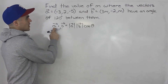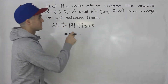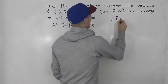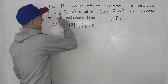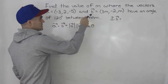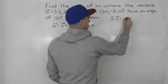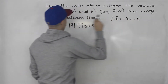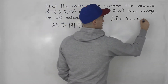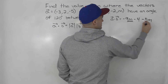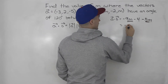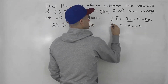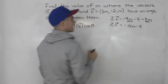Let's get an expression for the dot product between these two vectors. It's just going to be the x components multiplied together. So negative 3 times 3m is negative 9m. 2 times negative 2 is minus 4. And then negative 5 times m is negative 5m. Notice that these are like terms, so negative 14m minus 4. That is the expression for the dot product between a and b.